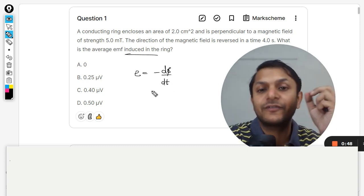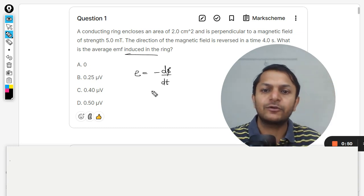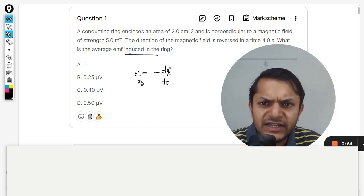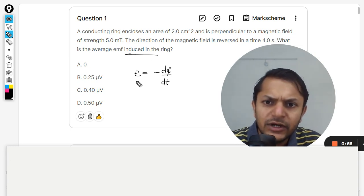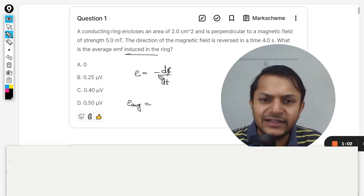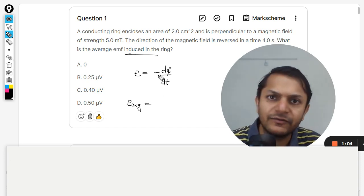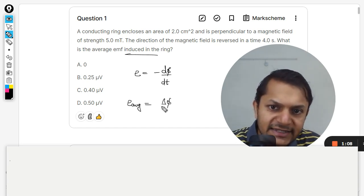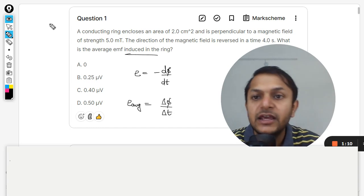If we talk about the average values, I'm going to neglect the negative sign because I'm only concerned with the magnitude. So the average value can be taken as ΔΦ divided by Δt. Now you see in this question particularly they are talking about the initial and final state of the ring.